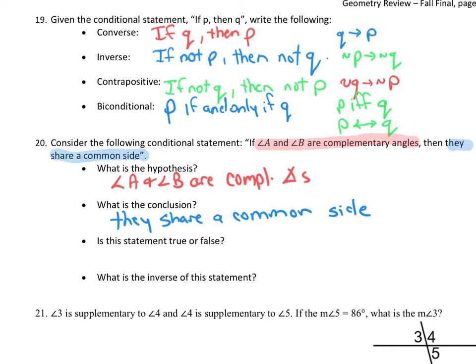Is this statement true? Do two complementary angles have to share a common side? If I draw angle A and angle B forming 90 degrees, they share a common side — that's the example where it's true. But what's called a counterexample is an example that shows the statement is false.